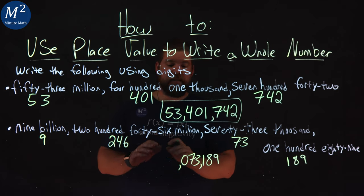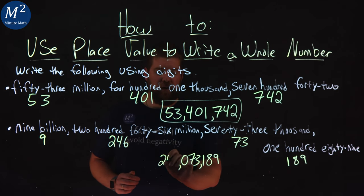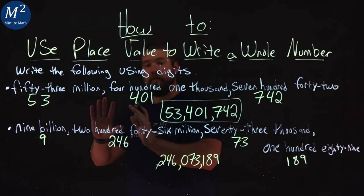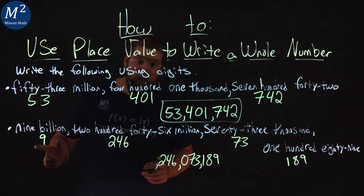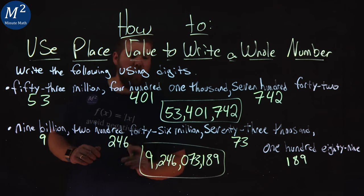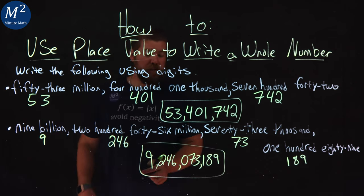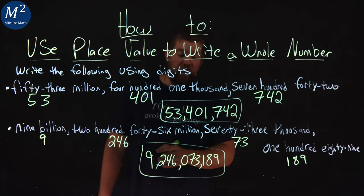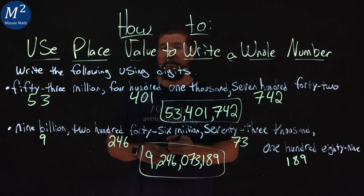Then we have 246 million, which is our next section, 246 million. Another comma to get to the billions, and we just have a 9 here. And so there we have our number written out using digits, 9,246,073,189.